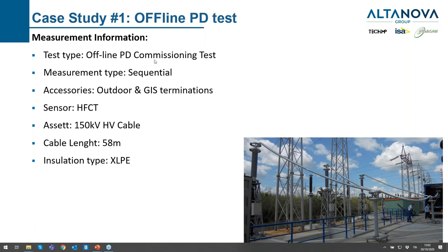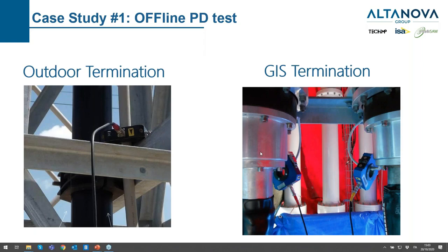The first case study is an offline PD commissioning. The test was sequential; the accessories were outdoor and GIS terminations. It was a very short cable — 150 kV, cross-linked polyethylene (XLPE). The sensors used were high-frequency current transformers, not permanently installed. We had an outdoor termination sensor and a GIS termination sensor.